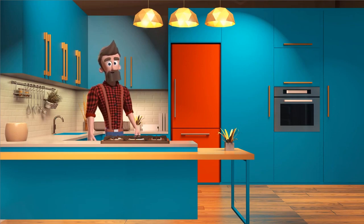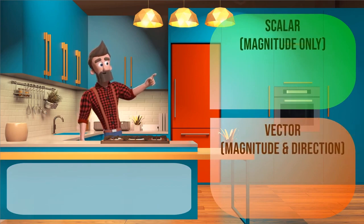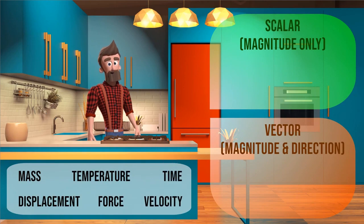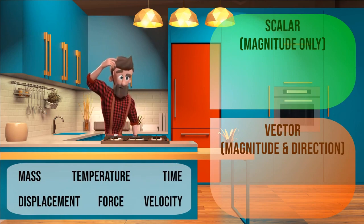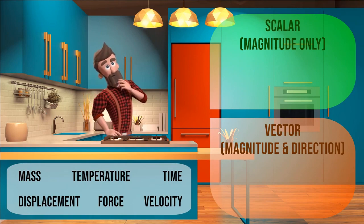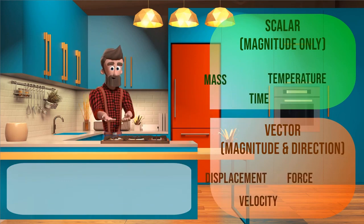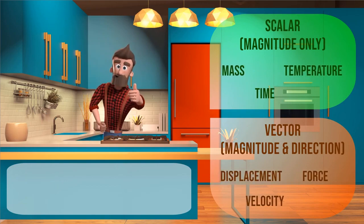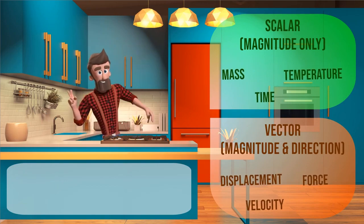So here we have two types of physical quantities: the scalar and vector quantities. Scalar quantity only has magnitude, but vector quantity has both magnitude and direction. Below are the six physical quantities we learned from the kitchen. The mass, temperature, and time are scalar quantities as they only have magnitude. But the displacement, force, and velocity are vector quantities as they have both magnitude and direction.